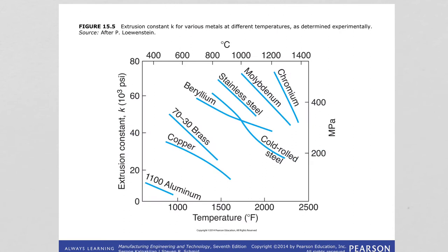From the force equation, using known force values and cross-sectional areas, one can determine the extrusion constant K for different materials experimentally. The graph shows that K depends on temperature — with increasing temperature, K decreases, which means the force needed to extrude the material also decreases.